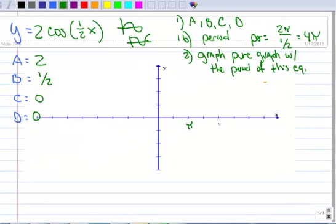We've got π, 2π, 3π, and 4π. And let's make the amplitude 1 right there for our pure graph, 1 and negative 1.